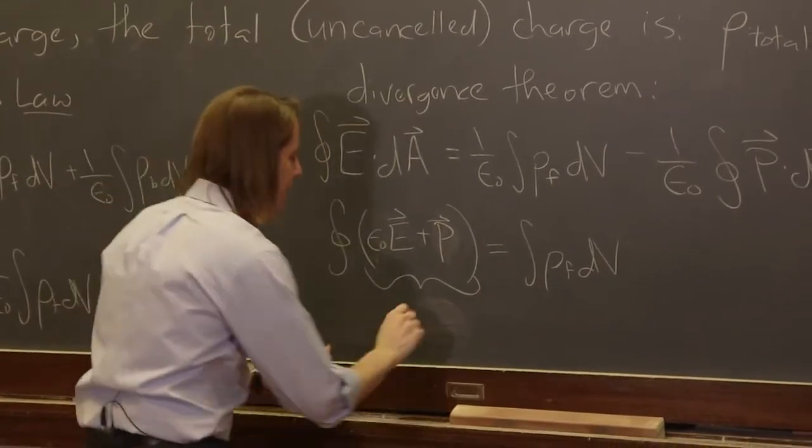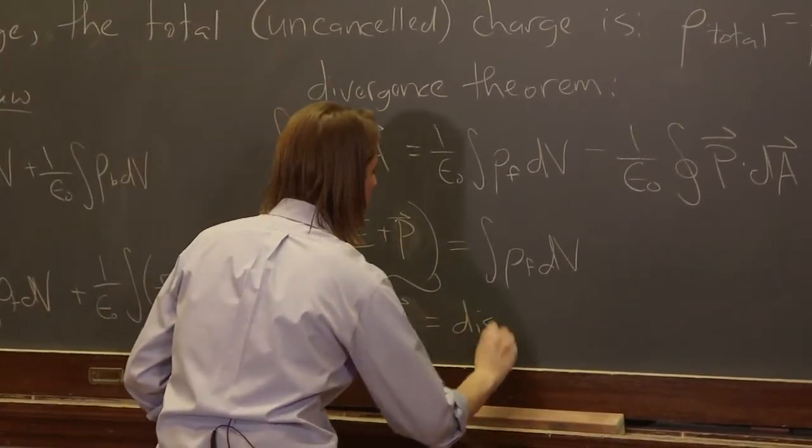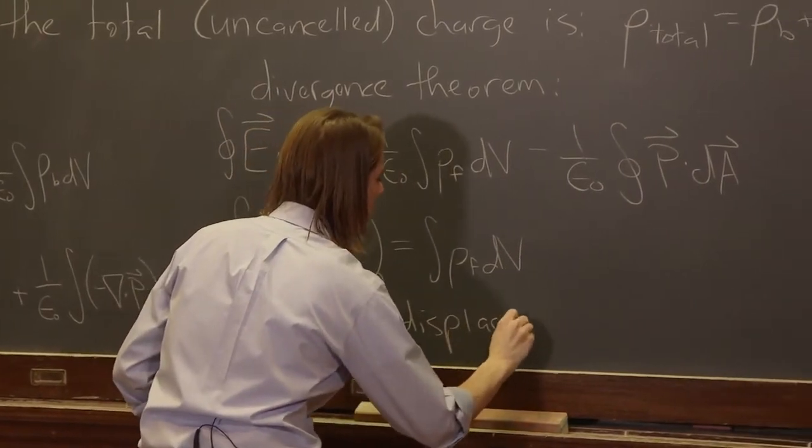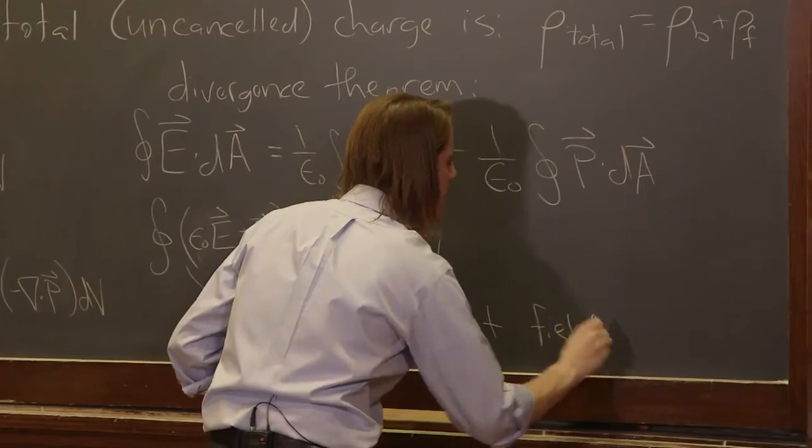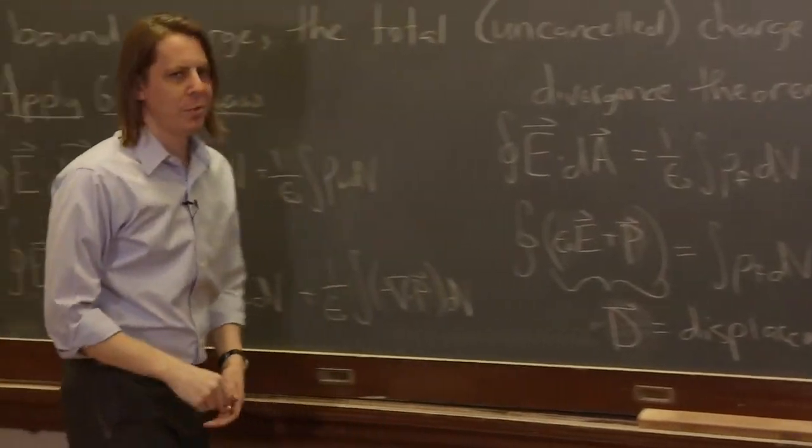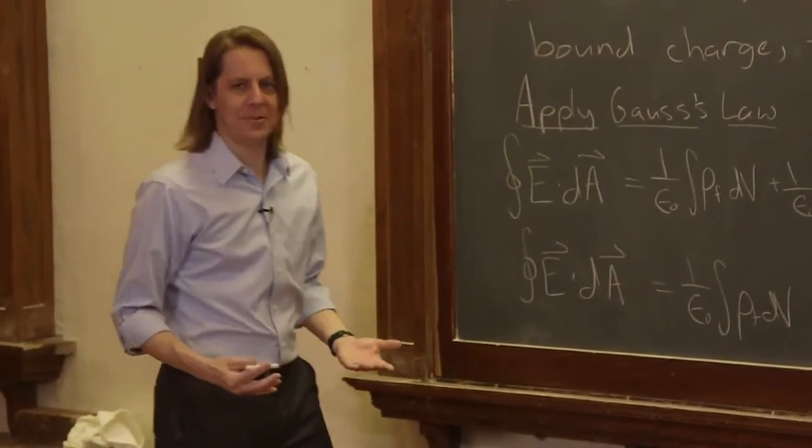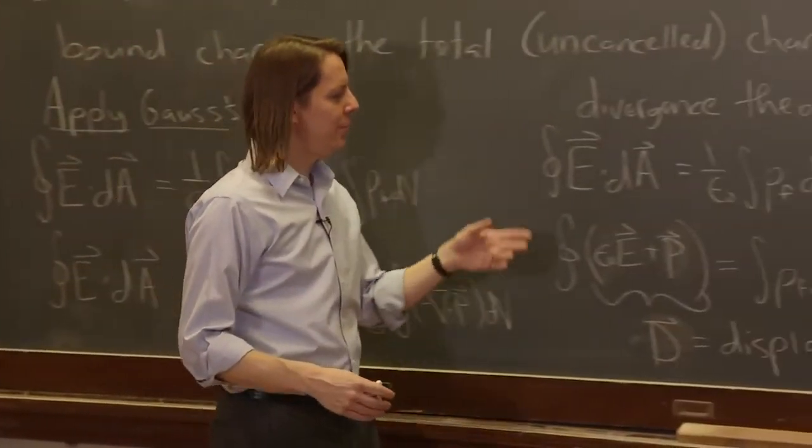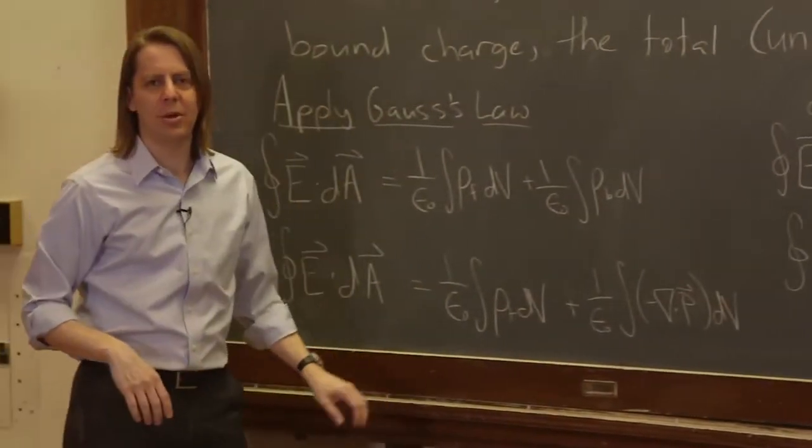The displacement field has always bothered me. It seems so unnecessary. Why do we need to make up a third field? We already have the electric field. We already have the polarization. Can't we just call this always epsilon naught E plus P? Do we have to call it D?